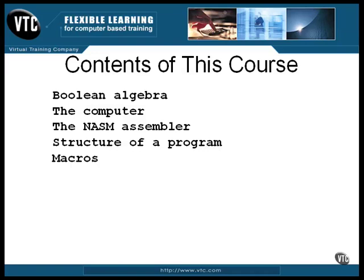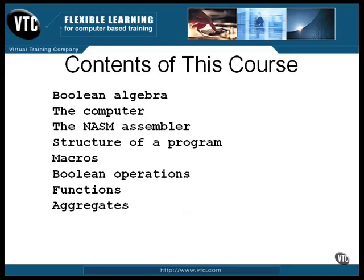Macros began with assembly language. In a way, assembly language macros were the predecessors to higher level languages. Macros come in handy in hundreds of ways and are a very important part of assembly language programming. Boolean algebra is visited again, but this time from the viewpoint of a Boolean operation performed by the CPU. Assembly language functions and function calls are very important — one of the most useful things you can do with assembly language is to write functions. Aggregate data includes arrays and data block structures, including addressing C structs and C bit fields.